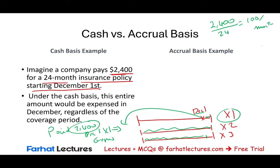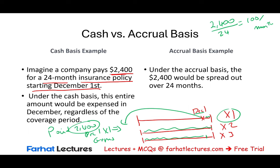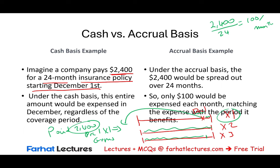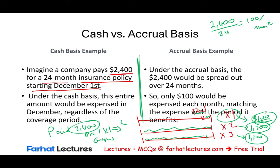Under accrual accounting, we expense $100 per month for 24 months. That means only $100 is expensed in Year 1 (December), $1,200 is expensed in Year 2 (12 months), and $1,100 is expensed in Year 3 (11 months) — totaling $2,400, spread out over the life of the policy.